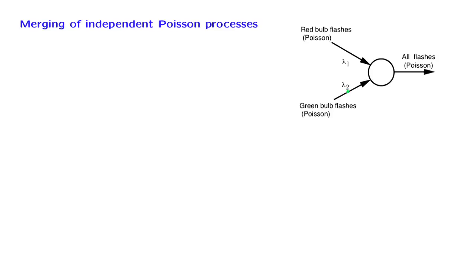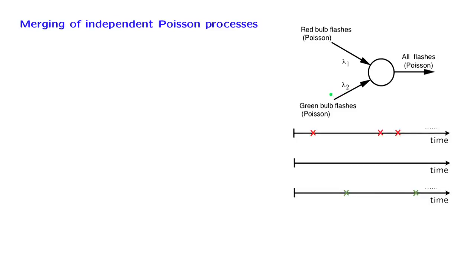So this will be our final conclusion, but we want to verify that this is indeed correct. We have the two arrival processes, the red one and the green one. The merged process is formed by recording an arrival at any time where either of the two processes records an arrival. The number of arrivals in the merged process during a time interval is equal to n1 plus n2, the number of arrivals in the first process plus the number in the second process.